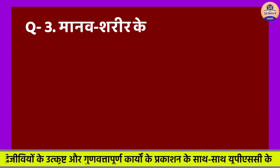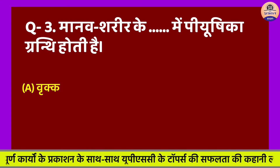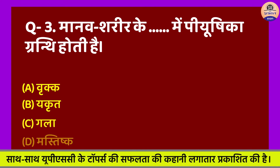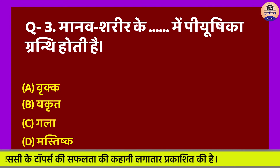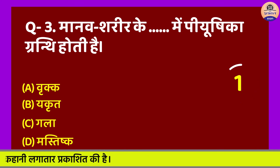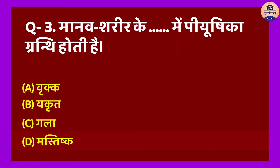Question No. 3: Manav sharir ke kahan mein piyushika granthi hoti hai? A. Vrik, B. Yakrit, C. Gala, D. Mastishk. Sahi jawab hoga Option D - manav sharir ke mastishk mein piyushika granthi hoti hai. Piyush granthi manav mastishk mein chetak aur ardh-chetak ke madhya hoti hai.